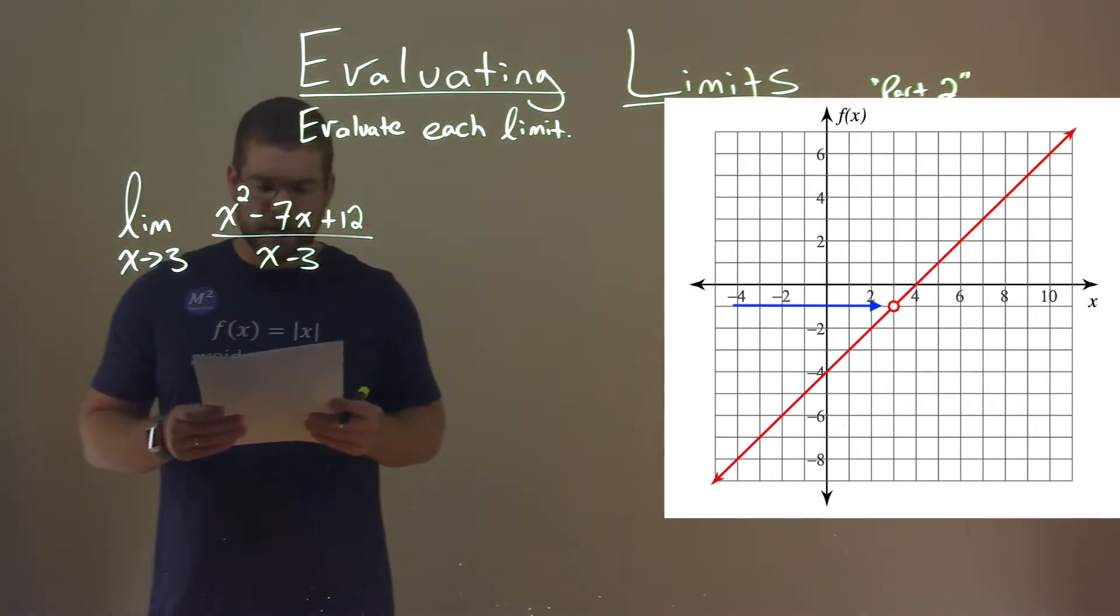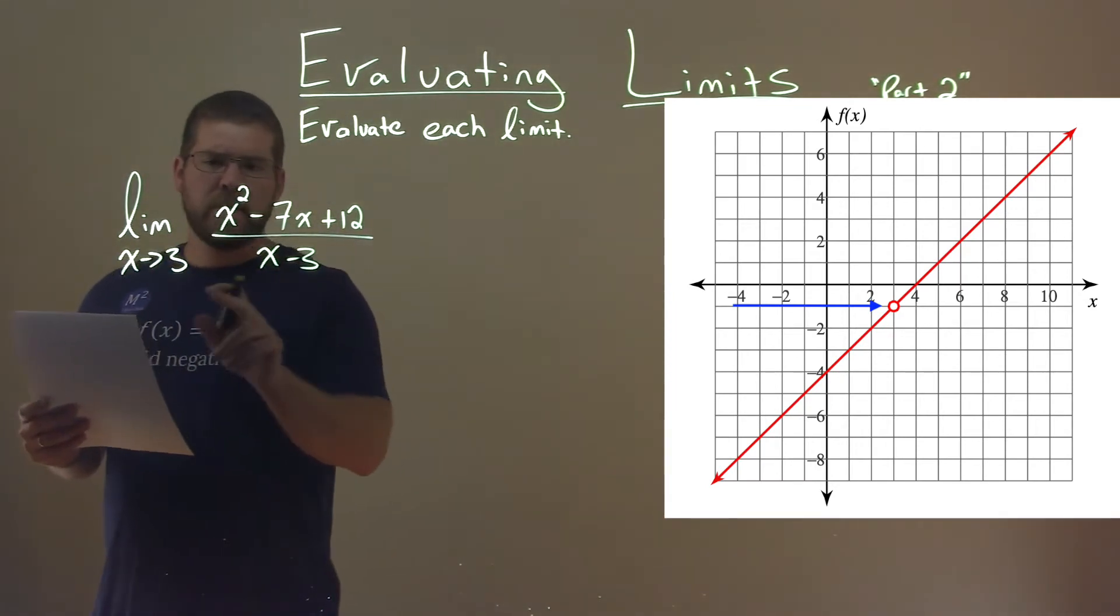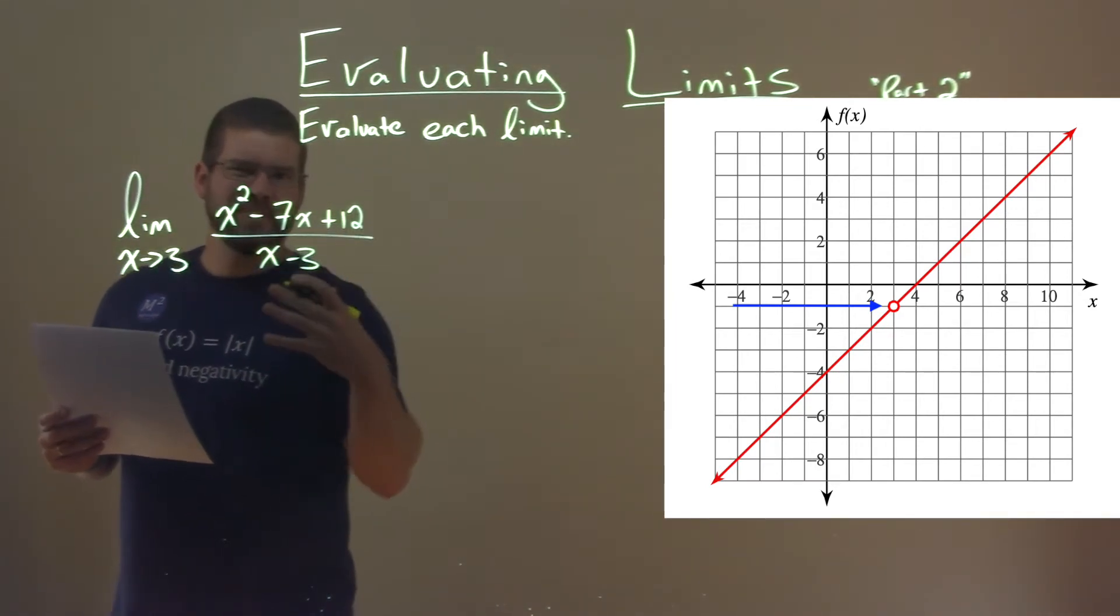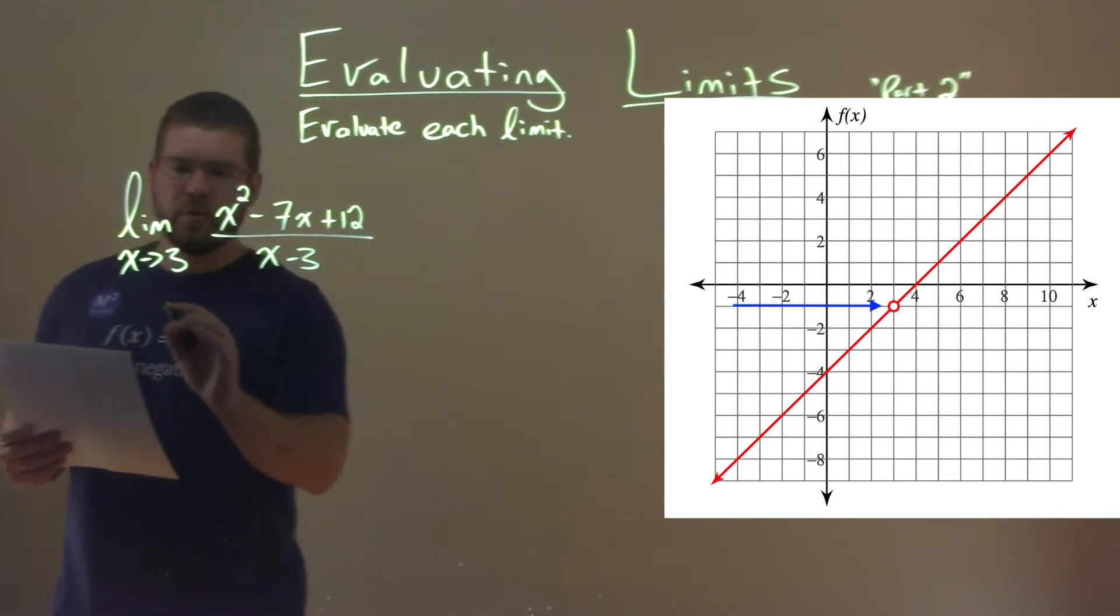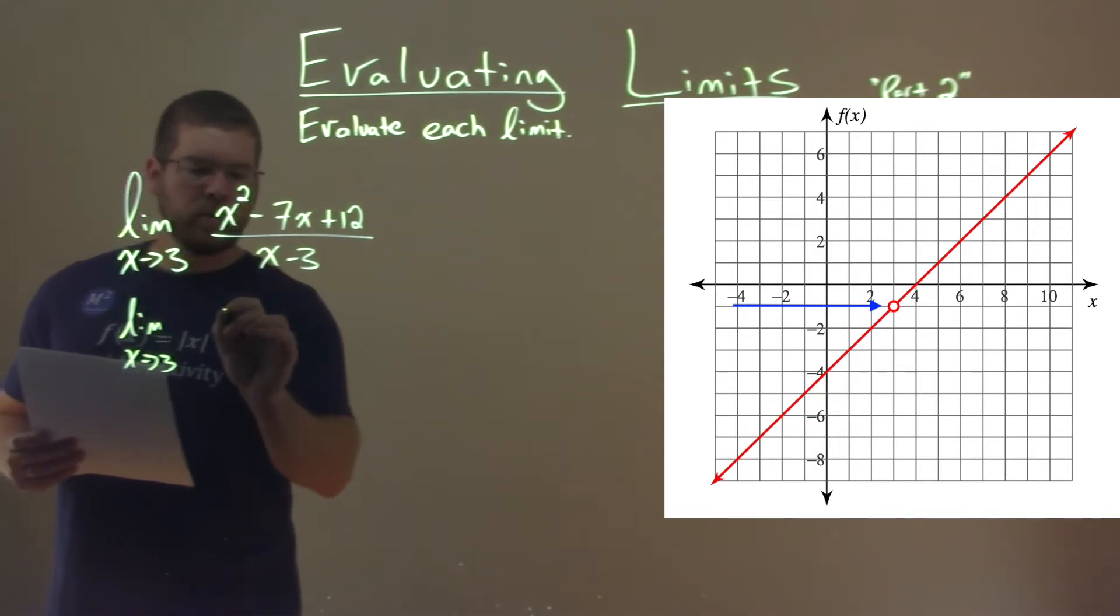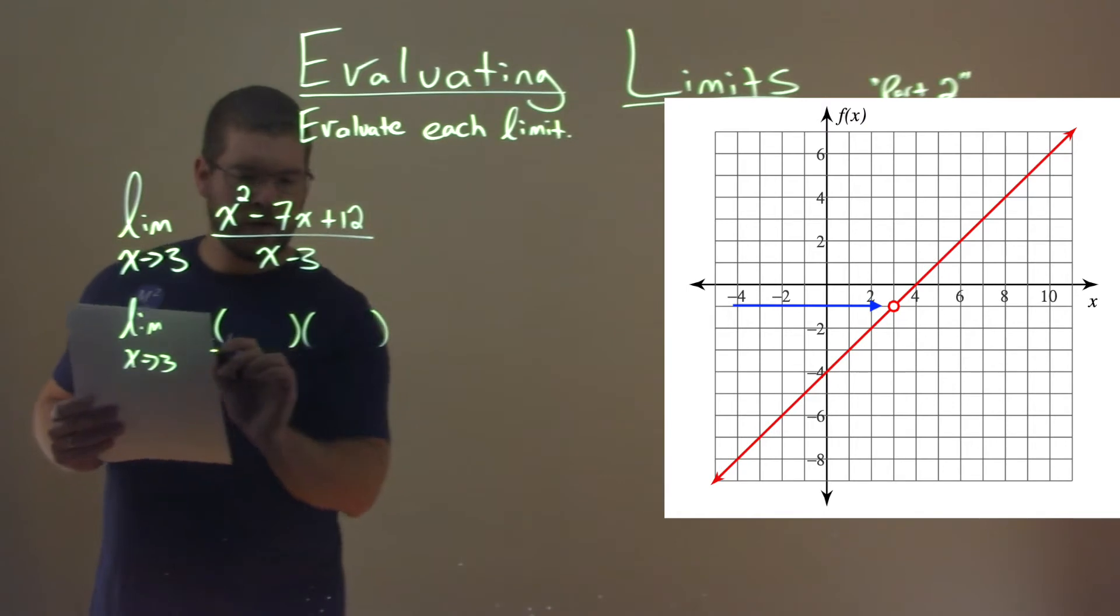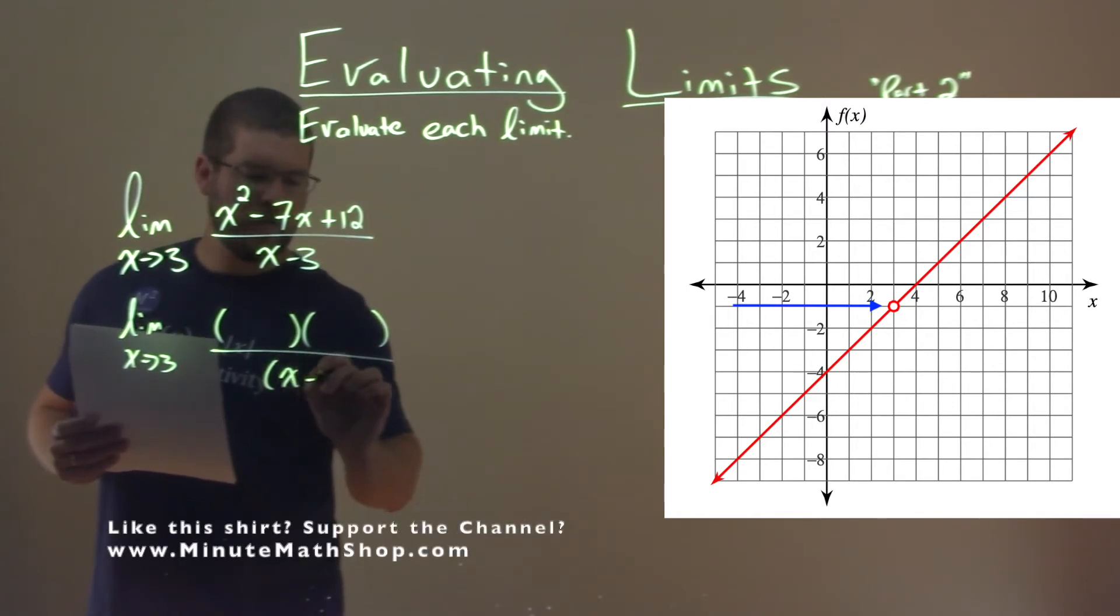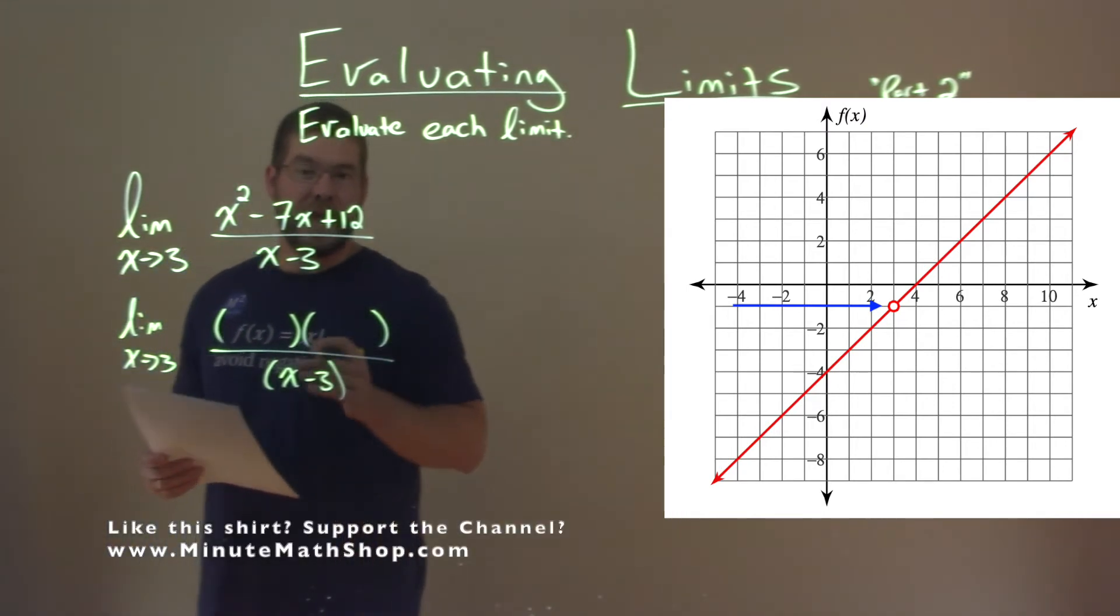So, to do that algebraically, we want to see if we can simplify this limit. We're going to factor the numerator here. We have the limit as x approaches 3 of our numerator, and we want to see if that can factor. The goal is to see if one of the factors is x minus 3. And it actually is, and that's always a good telling point here.